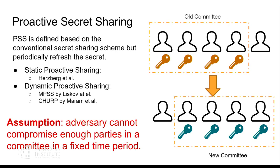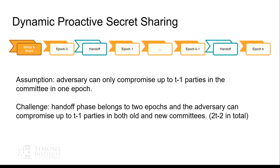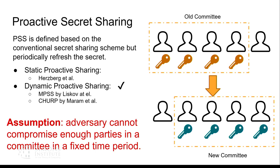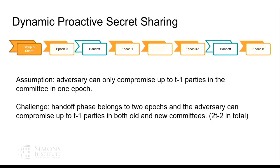So in order to address this issue, people propose proactive secret sharing. It is defined based on the conventional secret sharing scheme. The difference is, these schemes periodically refresh the secret. There are two kinds of proactive secret sharing. The first one is static, which means we only update the shares but do not change the members of the committees. And the other one is called dynamic proactive secret sharing, which means we change the committee and the shares. The assumption in the dynamic proactive secret sharing is actually changed to the adversary cannot compromise enough parties in a fixed time period, which is much more practical. So with this intuition in hand, we choose to design a proactive dynamic secret sharing flavor.